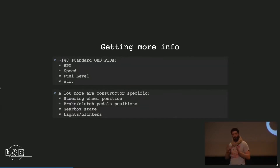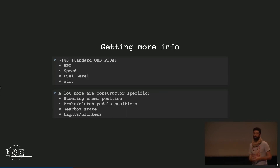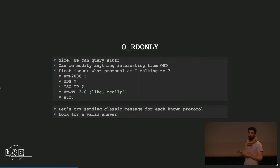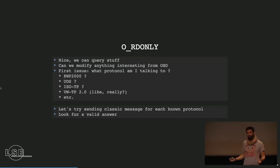I can query standard OBD PIDs — RPM, speed, fuel level — but for more interesting data like steering wheel position, brake and clutch pedal, gearbox status, lights, or blinkers, you need constructor-specific PIDs. To find those you'd need to take things apart or have very good friends with a manufacturer. I tried to find which protocol I was talking to — KWP2000, UDS, ISO-TP, the Volkswagen variant — by brute-forcing introductory messages to find valid answers.